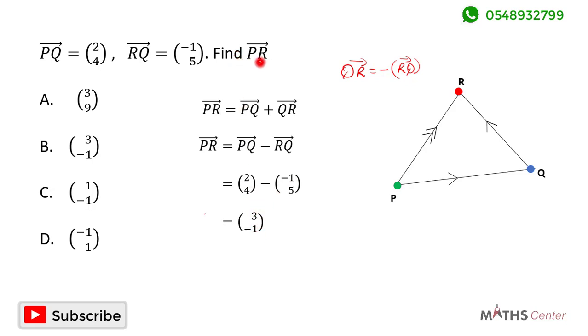So it means that the vector PR is (3,-1). When we look through the options here, the correct option is option B: (3,-1).